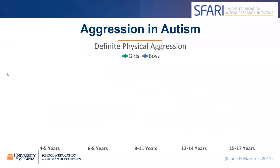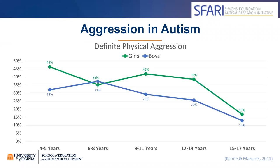We also looked at differences between boys and girls. In the general population, we expect aggression to occur much more commonly in boys. But we were very surprised to find that was not the case in autism — in fact, girls in our sample were relatively more likely to show definite physical aggression. This was surprising and different from what we see in the general population. This may tell us there are some differences in underlying mechanisms of aggression in the autism population that could be informative for treatment strategies.